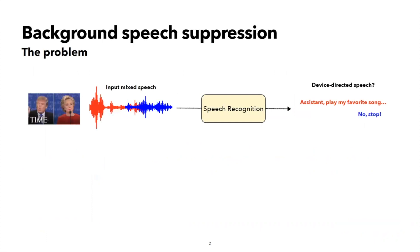Consider the following scenario. You have a smart assistant device, such as a smart speaker, and you want to give it an instruction. For example, 'assistant, play my favorite song.' But as you are giving this instruction, someone else starts talking in the background. We want the device to only listen to what you said and ignore anyone else. How can we do this?